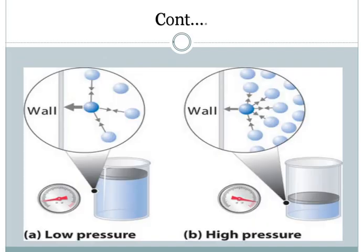At low pressure, a molecule is attracted or repelled by fewer neighboring molecules. At high pressure, more molecules are colliding with each other and exerting pressure on the walls of the container. This increased crowding at high pressure contributes to non-ideal behavior.